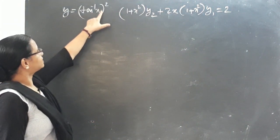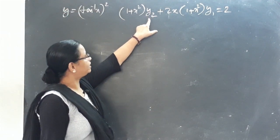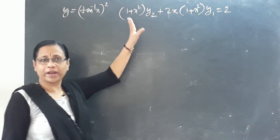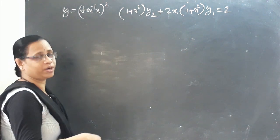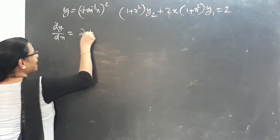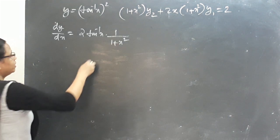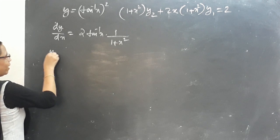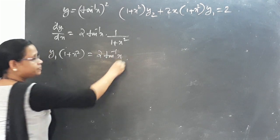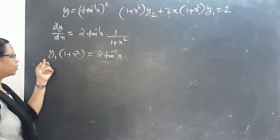Next question: y equals (tan⁻¹x)². We have to prove that (1 plus x²)·y2 plus 2x·(1 plus x²)·y1 equals 2. First, find y1: dy by dx equals 2·tan⁻¹x into 1 by (1 plus x²). Cross multiplying: y1·(1 plus x²) equals 2·tan⁻¹x. This gives us the root function to work with.